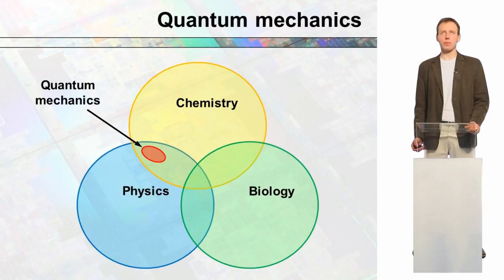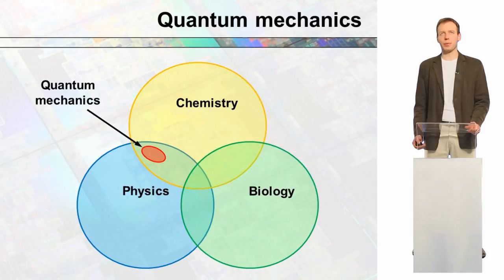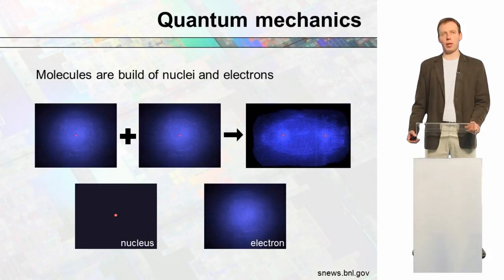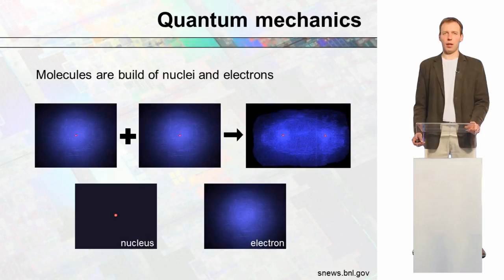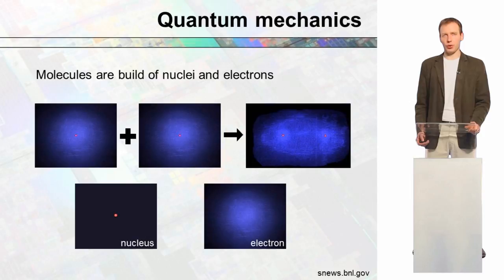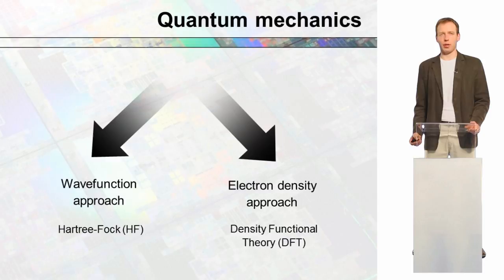Quantum mechanics. Applications of quantum mechanics lie rather between chemistry and physics, and there are not so many applications in biology. The quantum mechanics approach describes molecules as electron clouds and nuclei. When two atoms come close to each other, there is formation of bonds, described by deformation of particular electron clouds. We have two large approaches in quantum mechanics: the wave function approach and the electron density approach.